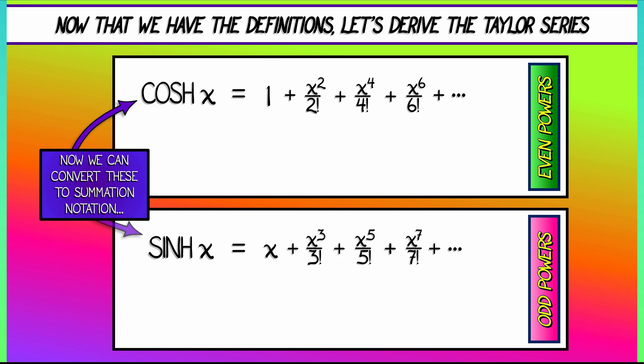Now, we can convert these series to summation notation very easily, using the same sorts of conventions we used for cosine and sine. The hyperbolic cosine is the sum k goes from 0 to infinity x to the 2k divided by quantity 2k factorial. Hyperbolic sine is the sum k goes from 0 to infinity x to the 2k plus 1 divided by quantity 2k plus 1 factorial. This is very nice. There are no more annoying minus 1 to the k things going on that we have to worry about.